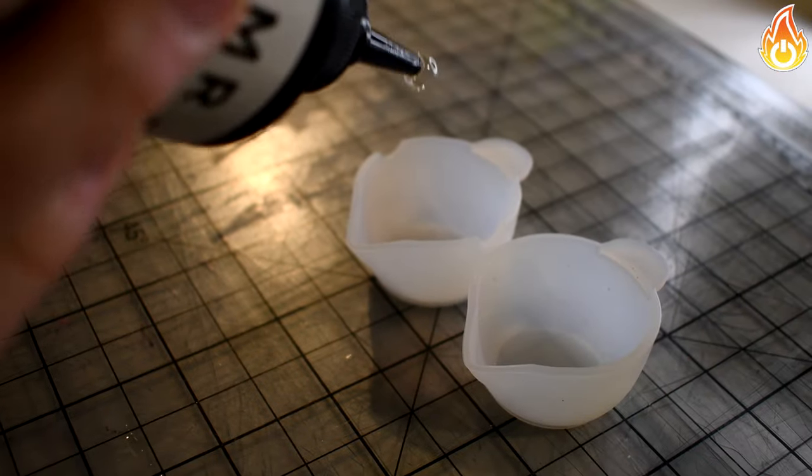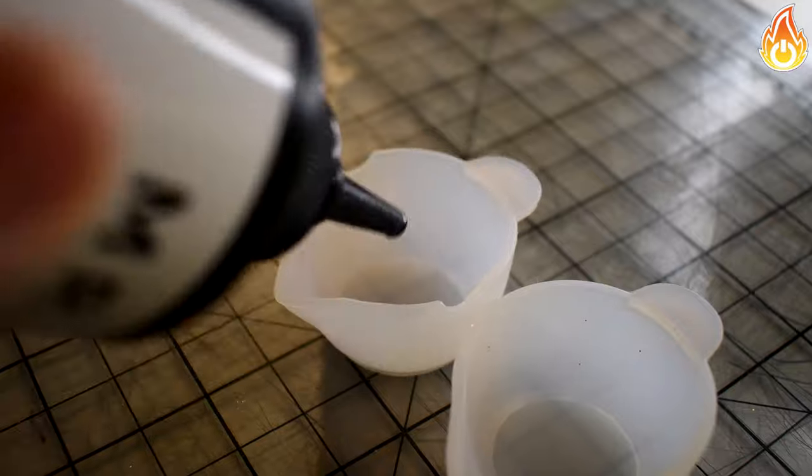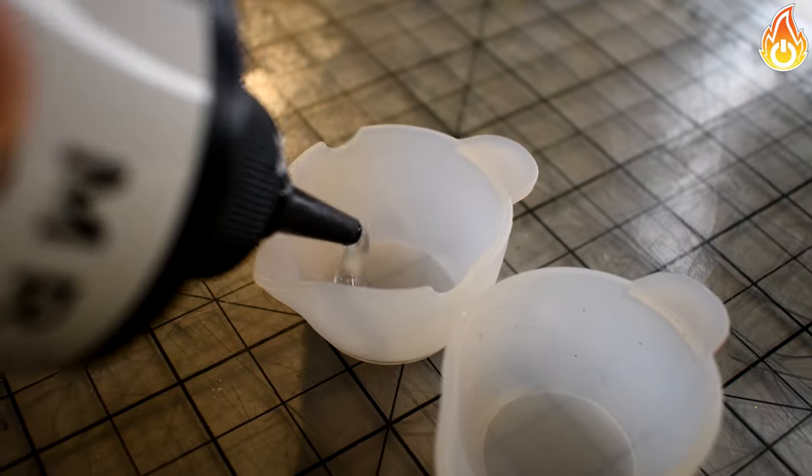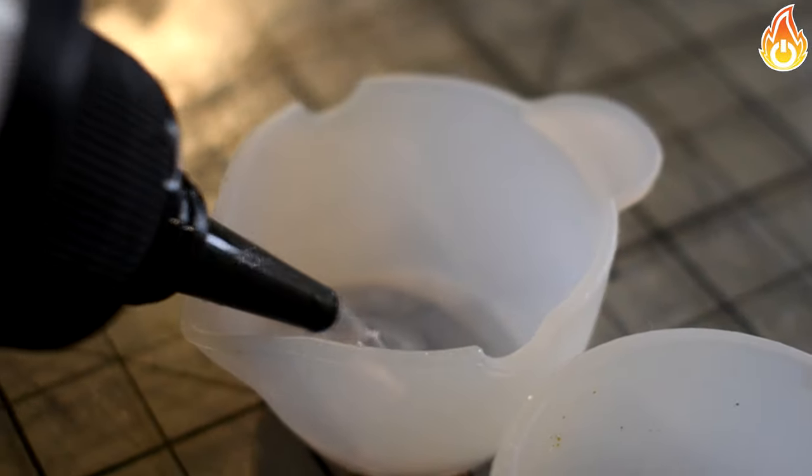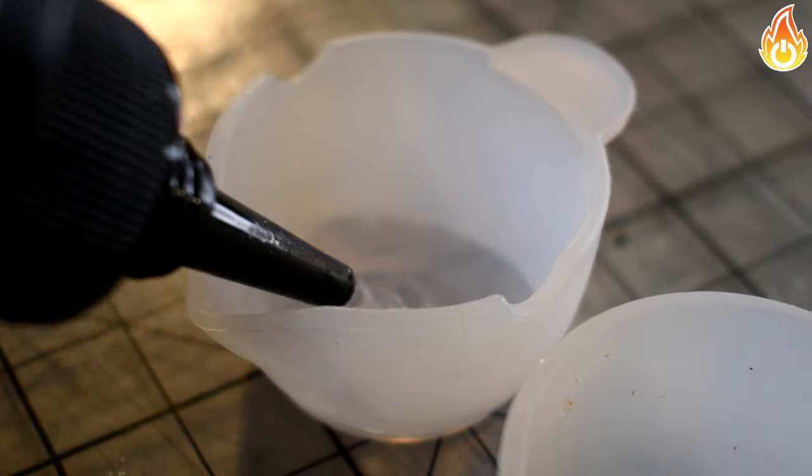Now we are going to make our second set of leaves. For the second set, we attempted to make a gradient effect by adding the colored dye into a clear dye and slightly mixing them. The results actually came out pretty nice.